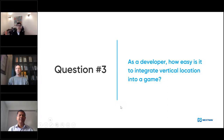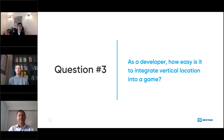It's definitely an opportunity, and very experimental. As an indie developer, you cannot compete with bigger budgets in terms of production quality or amount of content, so you have to think about new ideas. This is definitely a blue ocean. As a developer, how easy is it to integrate Vertical Location into a game? The good news is that with the Unity plugin, it only takes a couple of days. The integration is basically installing the Unity package — that's really fast. Then you have to understand the paradigm, how calibration works. I would say in two days, you're up and running.